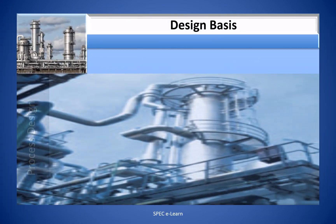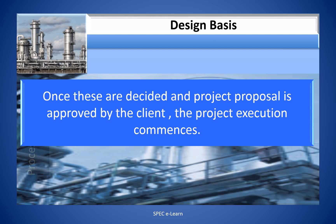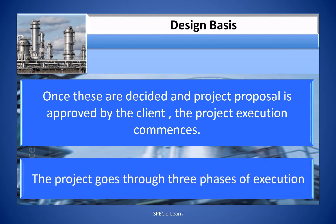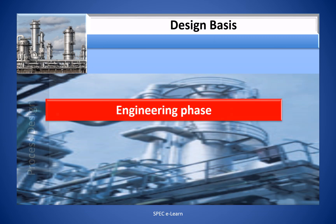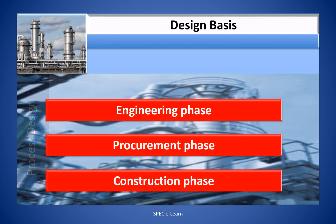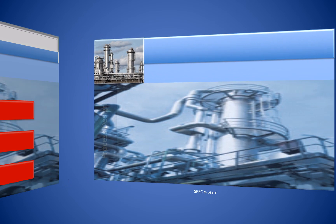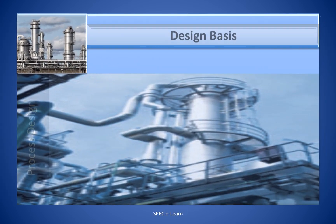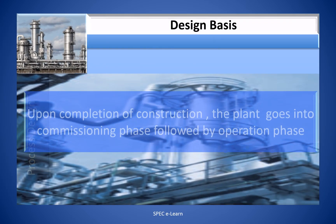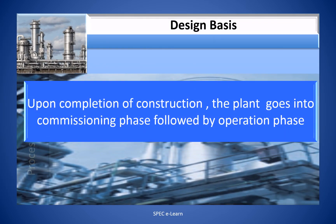Once these are decided and the project proposal is approved by the client, the project execution commences. The project goes through three phases of execution: engineering phase, procurement phase, and construction phase. Upon completion of construction, the plant goes into commissioning phase followed by operational phase.